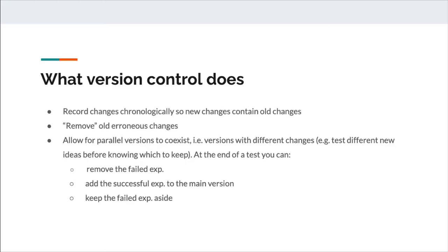What I haven't mentioned is that because version control allows parallel versions to coexist, it also allows for very easy collaboration where everyone can see what has been done by someone else. But we're going to see that next week.